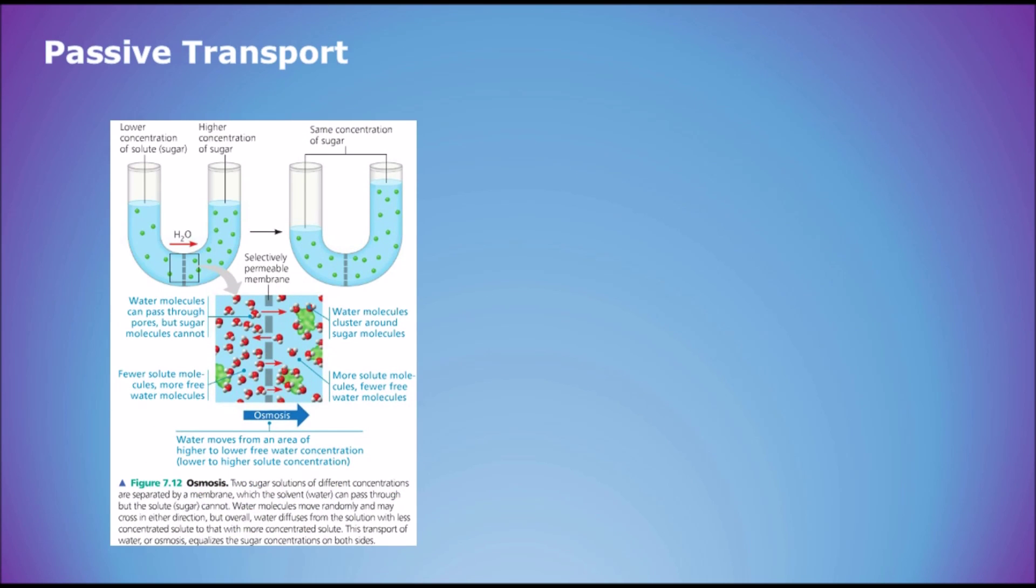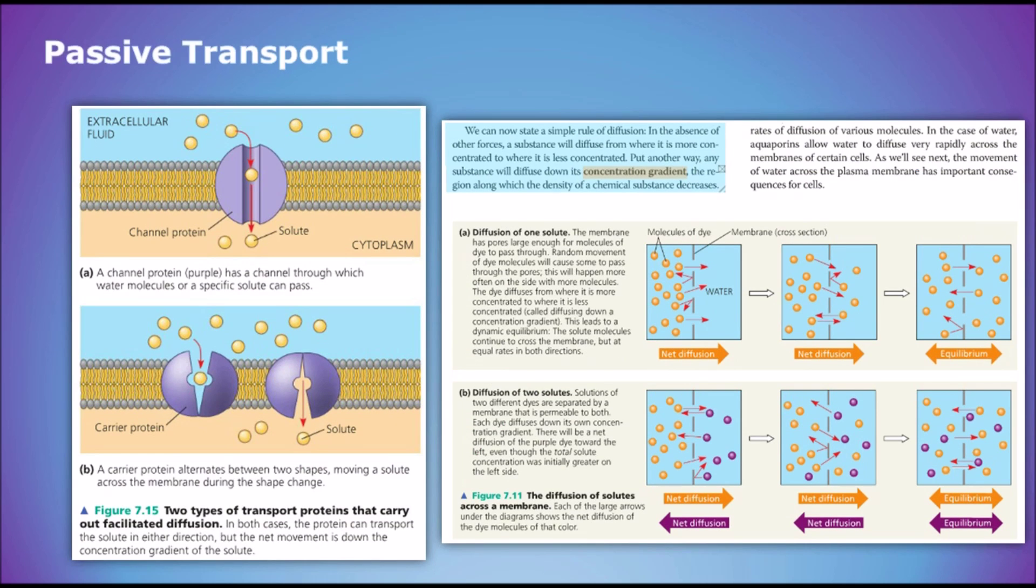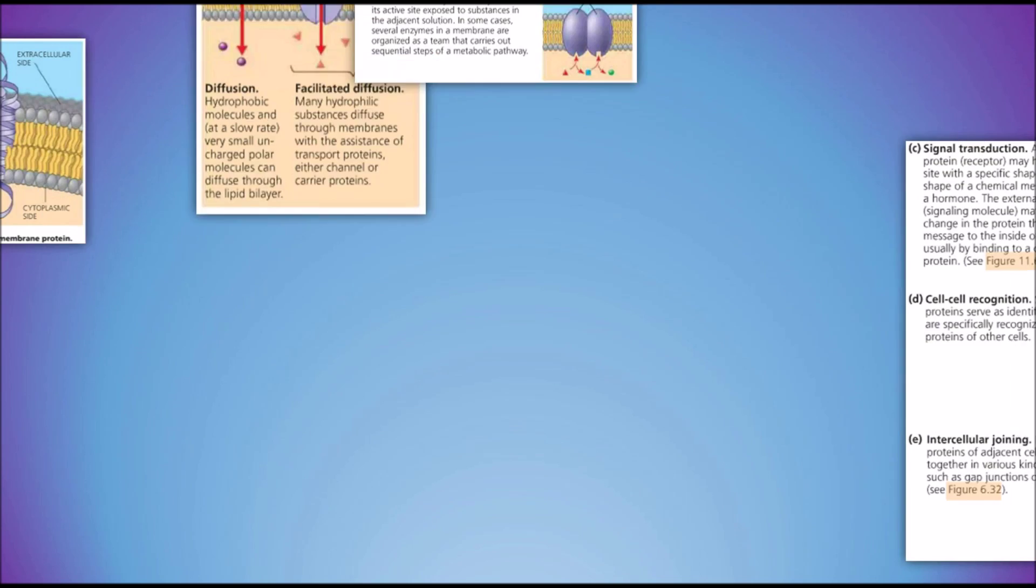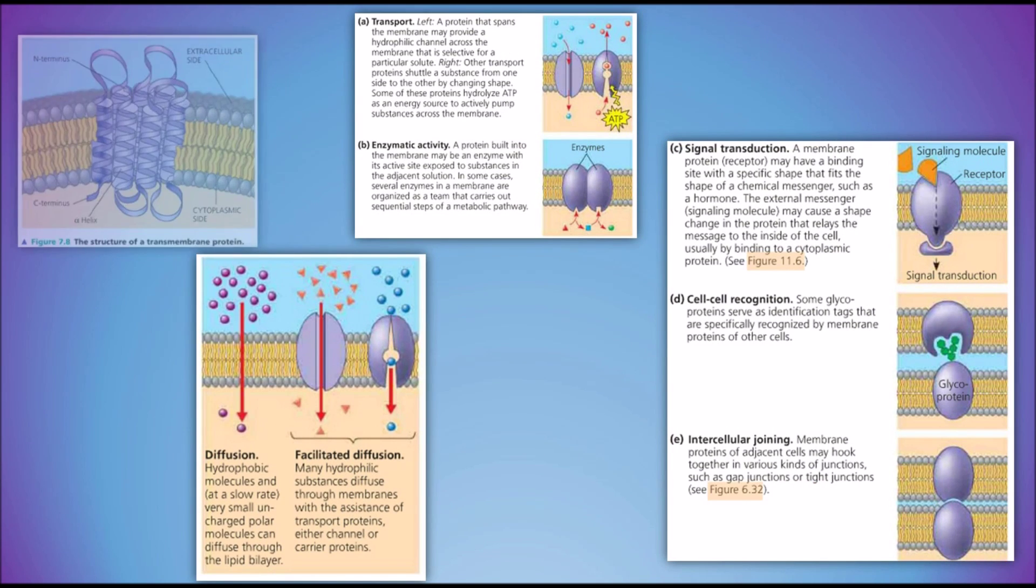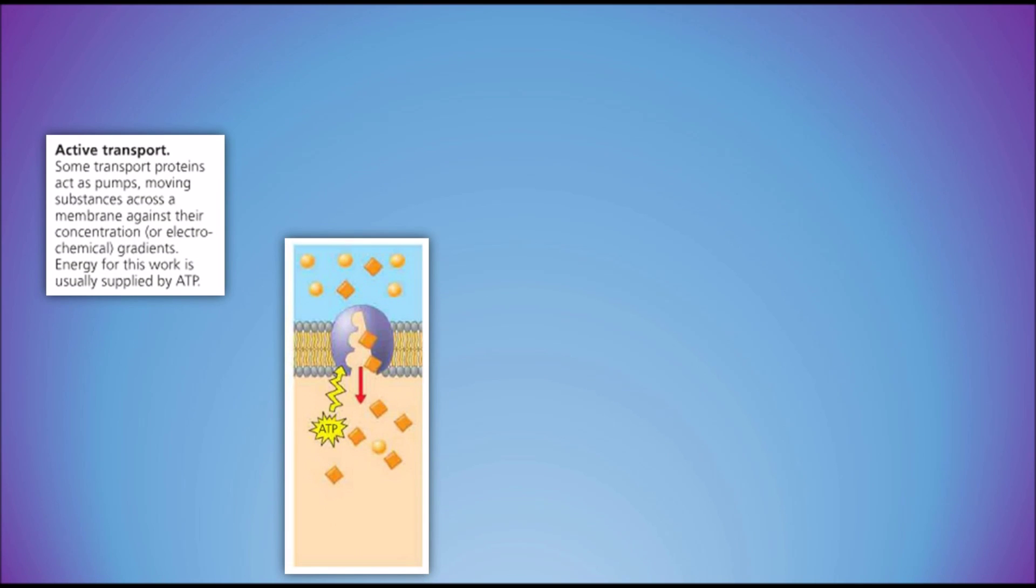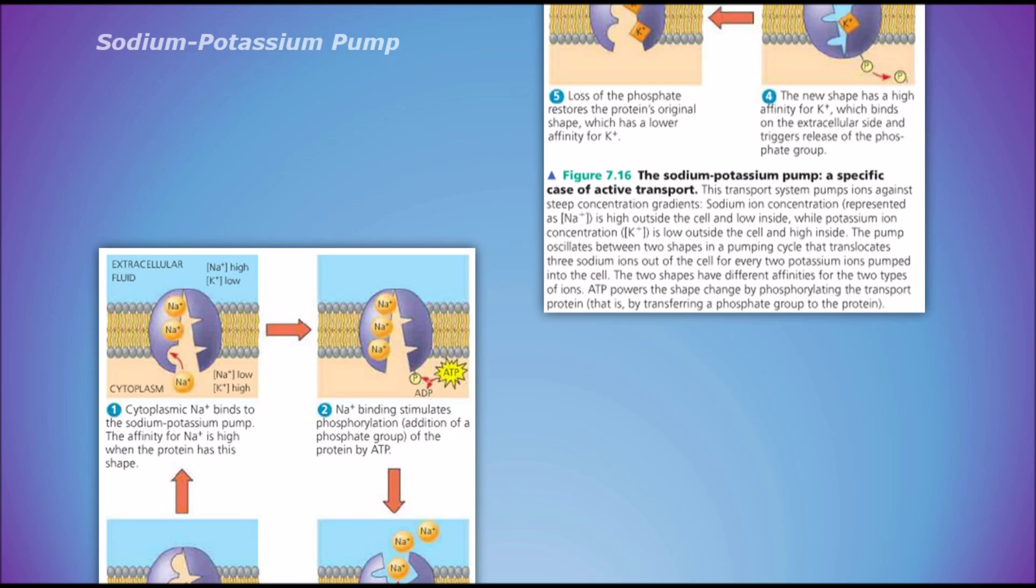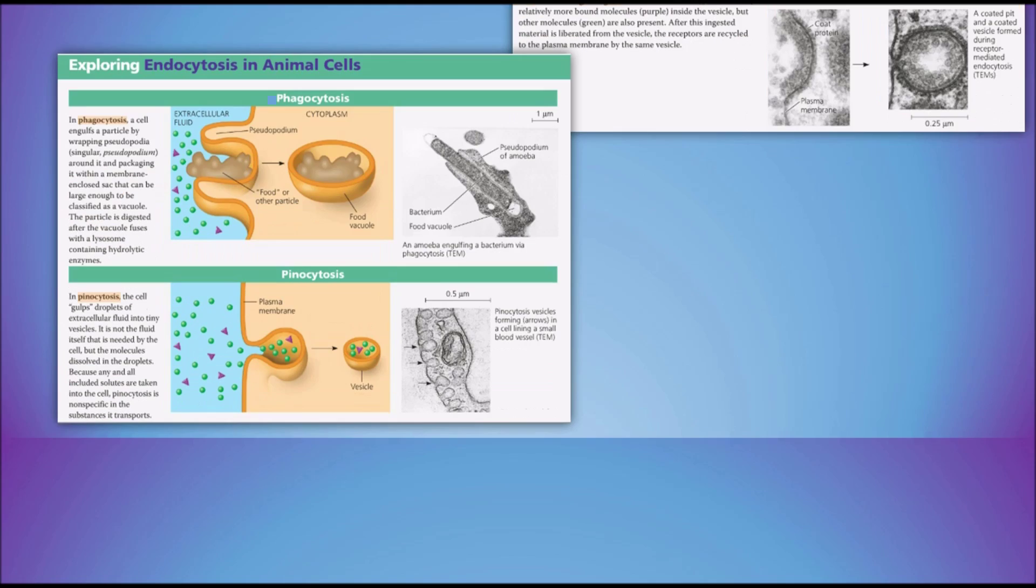Passive transport: osmosis, facilitated and normal diffusion, assisted by trans proteins. Including ion carrier and channel active transport. Uses ATP. Energy moves up. Guess what happens naturally? Na+K+ pump. In bulk transport through endo and exocytosis with the cell membrane.